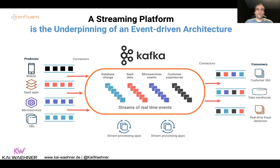Kafka serves as a central nervous system for your event-based architecture. All producers and consumers are decoupled from each other because Kafka is not just a messaging pipeline — it also stores the data for as long as you want. This is a main reason why people use Kafka in the middle of critical architectures instead of a messaging system which just empties the queue when someone consumes it. Kafka is built for scale and big data sets, and you can integrate with any application, including data warehouses, data lakes, and Hadoop or Spark-based systems.